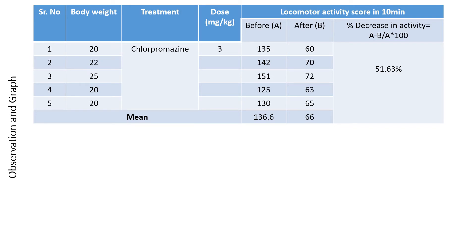This is the data table. Five animals were used with body weights of 20, 22, 25, 20, and 20 grams. A dose of 3 mg per kg chlorpromazine was given. The locomotor activity scores in 10 minutes before the drug were 135, 142, 151, 125, and 130 — giving a mean of 136.6. After the drug, scores were 60, 70, 72, 63, and 65 — giving a mean of 66. Using the formula (A minus B) divided by A multiplied by 100, the percent decrease in activity is 51.63%.